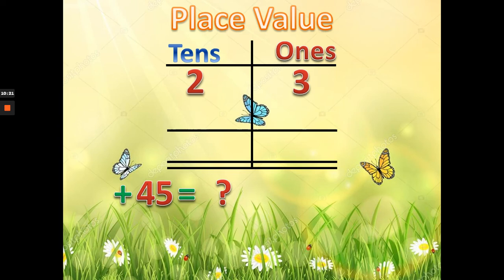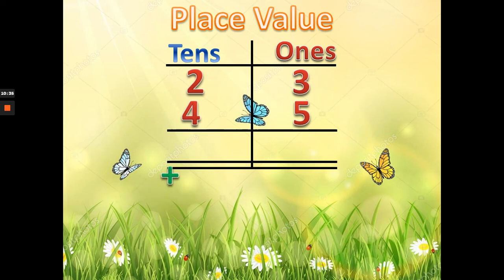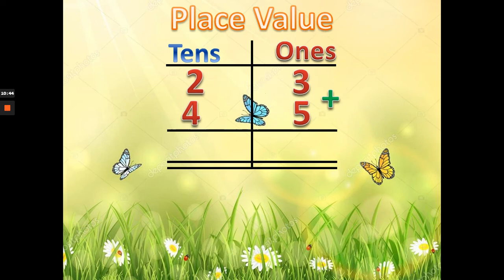Now for 45: 5 goes in the ones place and 4 goes in the tens place. Now we are ready to add. Ones place first: 3 plus 5 equals 8. Tens place: 2 plus 4 equals 6. So our answer is 68.